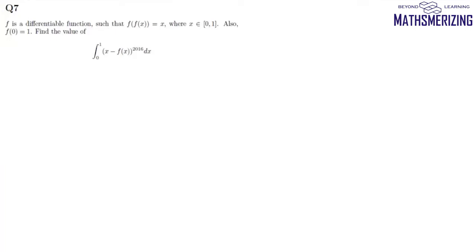Now question number seven: Let f be a differentiable function such that f(f(x)) = x where x belongs to [0,1], and also f(0) = 1. Find the value of the integral of (x - f(x))^2016 dx.